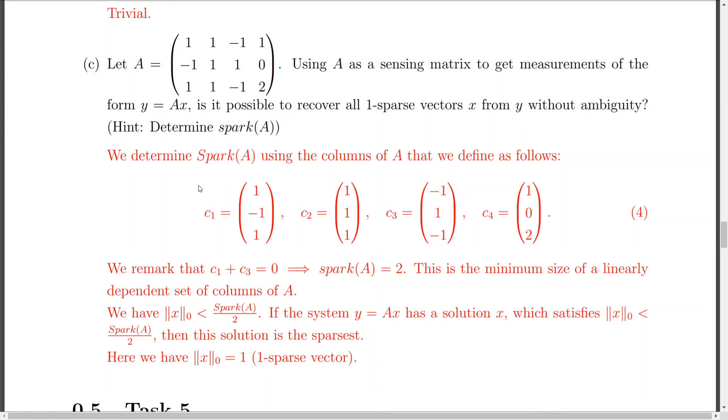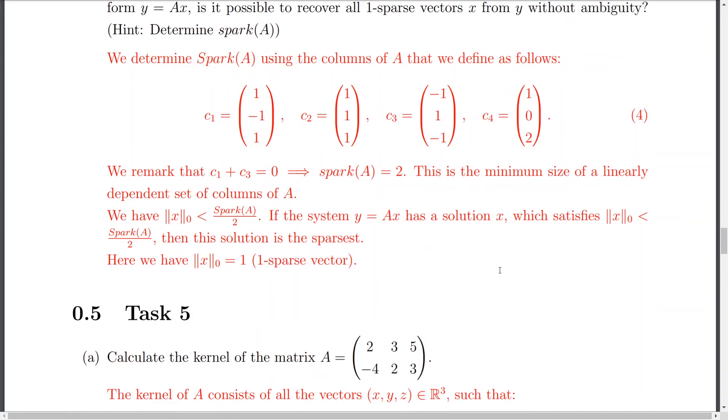So, we determined the spark using the columns of A that we defined following. And, unless I am wrong, I noticed only that C1 and C2, sorry, C3 actually equals 0. So, here the task is to find all these columns combinations that would lead me to 0 vector. So, yeah, I think C1 plus C3 will just give me 0 everywhere. And, because of that, I would conclude that the spark of the matrix A is equal 2.